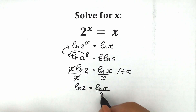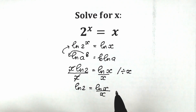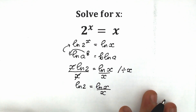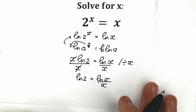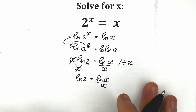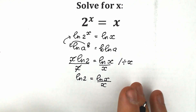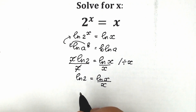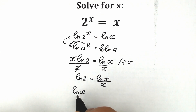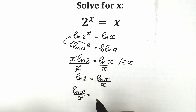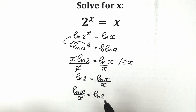As you can see, we've separated our expression into the constant and variables. Let's swap positions so variables are on the left side. So we have natural log x over x equal to natural log 2.